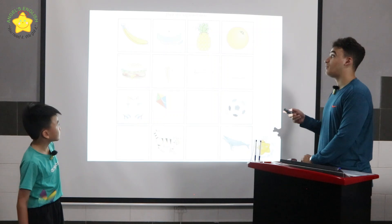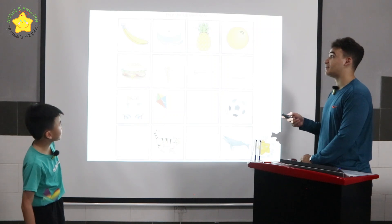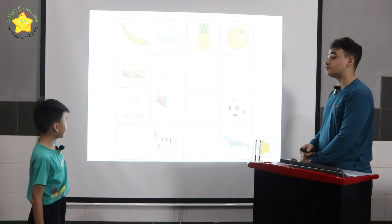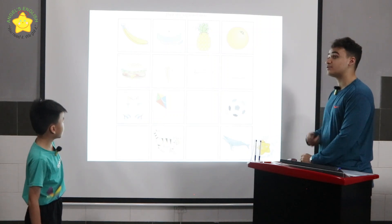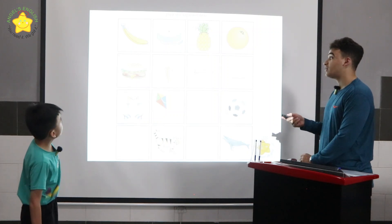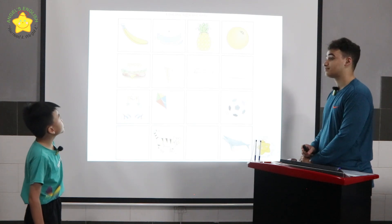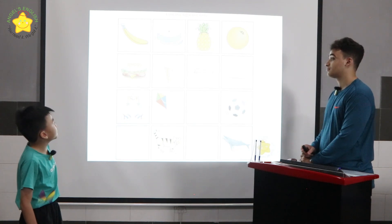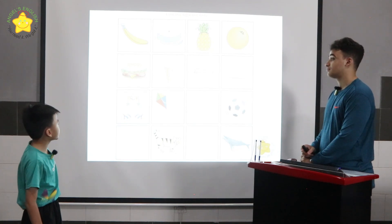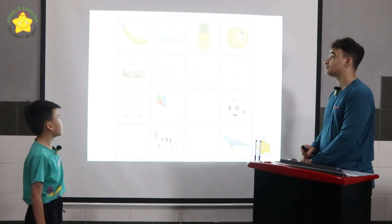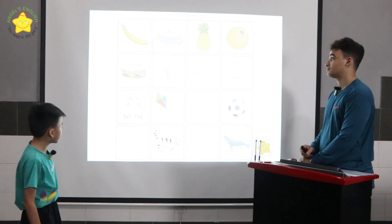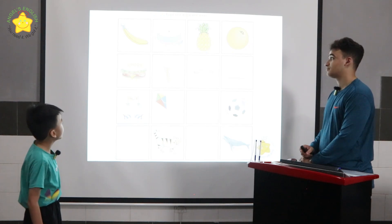Okay, this is called 'find the different one.' In row one, the cake is different, because the banana, the pineapple, and the orange are all fruits. Okay, please tell me which one is different in rows two, three, and four. In row two, the difference is ice cream, because ice cream is a dessert. The burger, meat, and chicken are food.